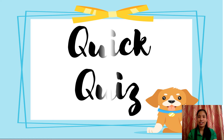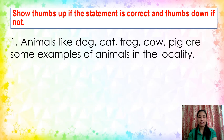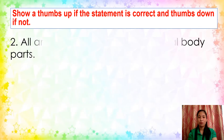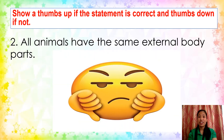So to check your understanding, let's have a quick quiz. Show thumbs up if the statement is correct and thumbs down if not. First: Animals like dog, cat, frog, cow, and pig are some examples of animals in the locality — that is a thumbs up. Number two: All animals have the same external body parts — that is thumbs down, because they have different body parts.